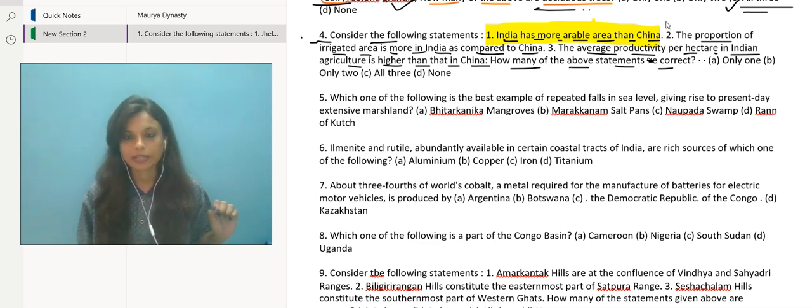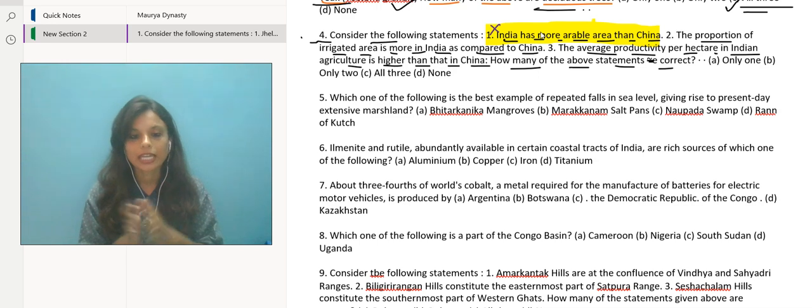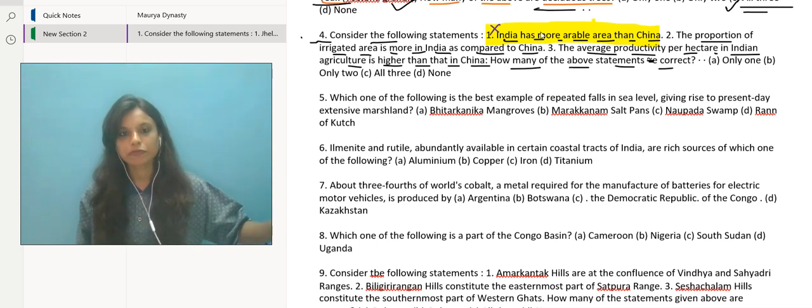Let's take the first statement: India has more arable area than China. This sentence is absolutely incorrect because China compared to India has a larger arable area. According to the World Bank study in 2018, China had about 135 million hectares of arable land.